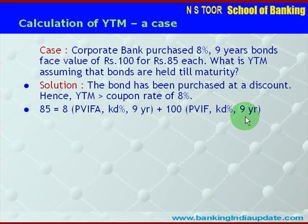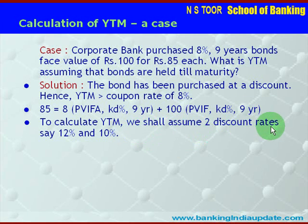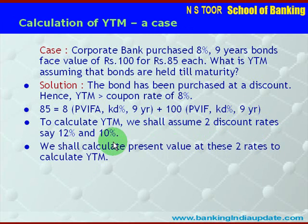For this purpose, we will be using discounted value tables and annuity tables. As mentioned earlier, to calculate YTM we shall assume two different discount rates. Let us assume 12% and 10% as the discount rates. Based on these two rates, we shall calculate the present value, and after that we shall be able to calculate YTM.